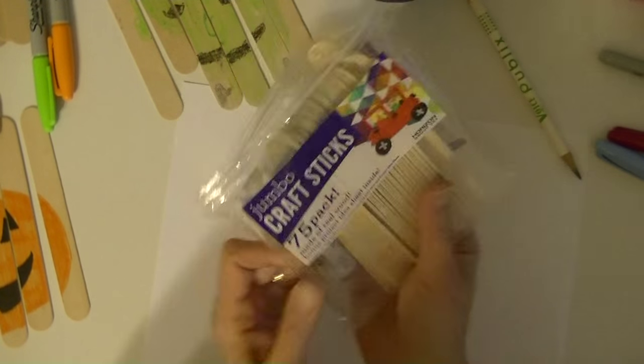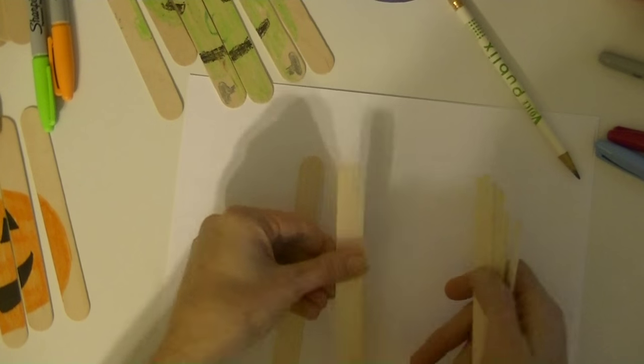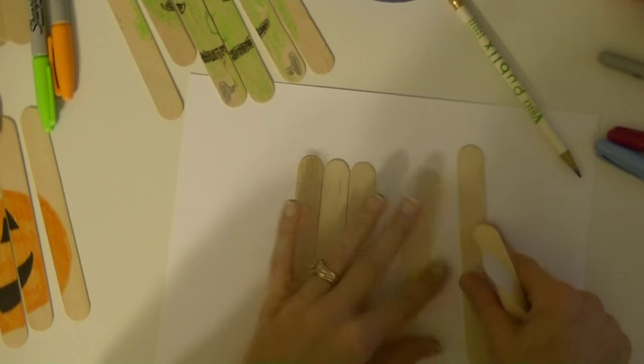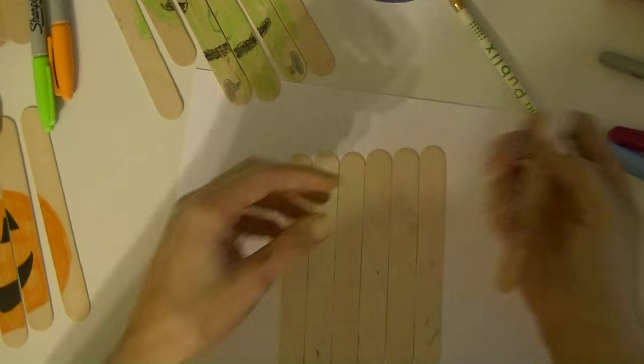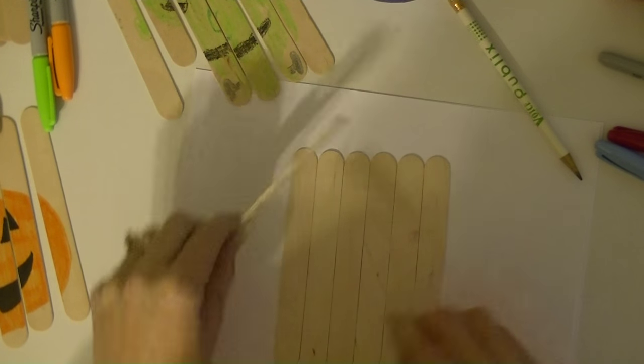All you need are the jumbo sized craft sticks. You're going to need six of those. I'm going to lay them out. I'm a really easy little crafty little ones. I love this one.